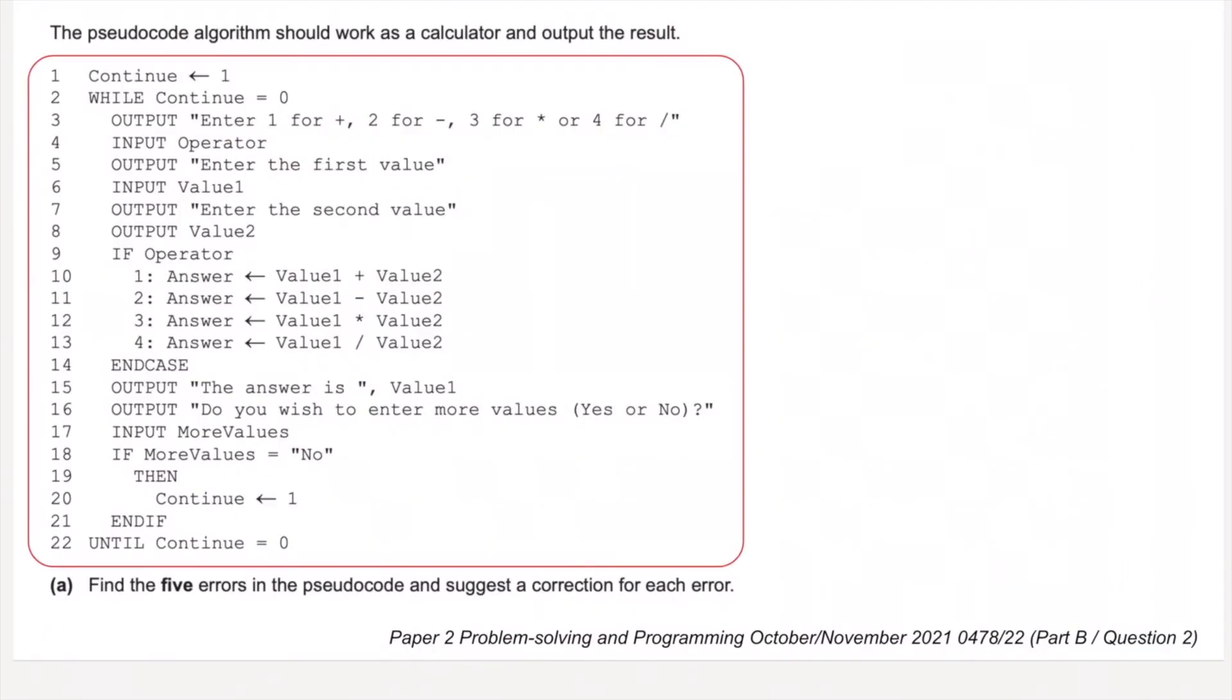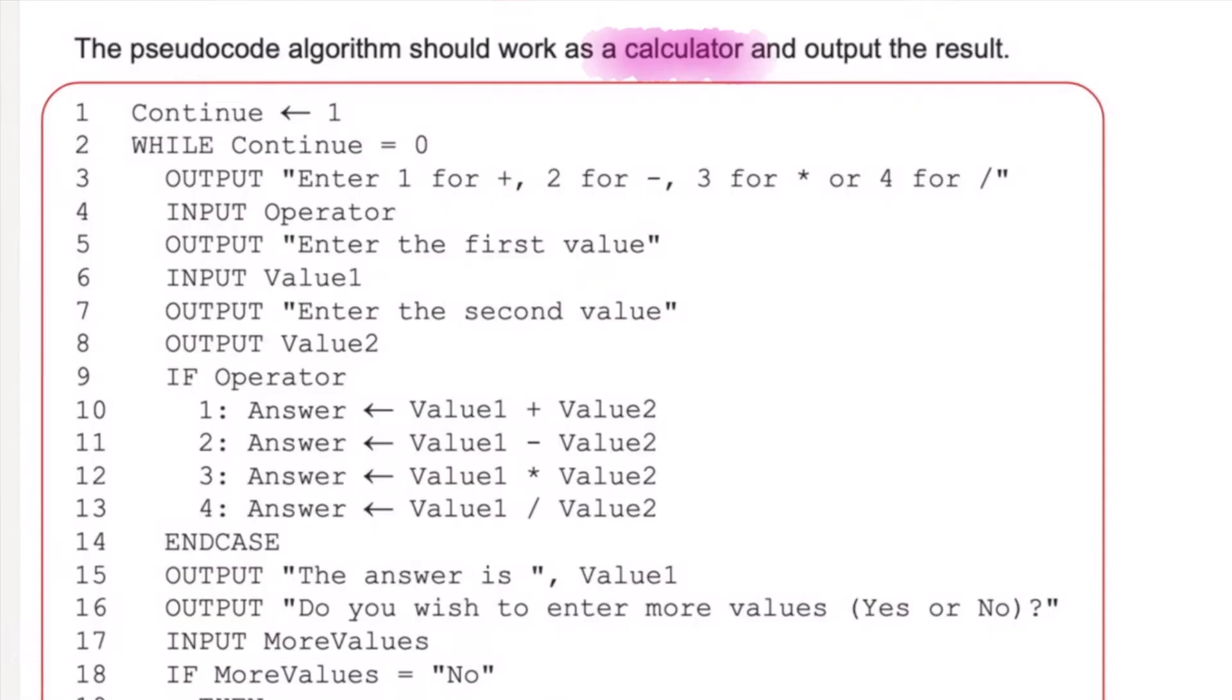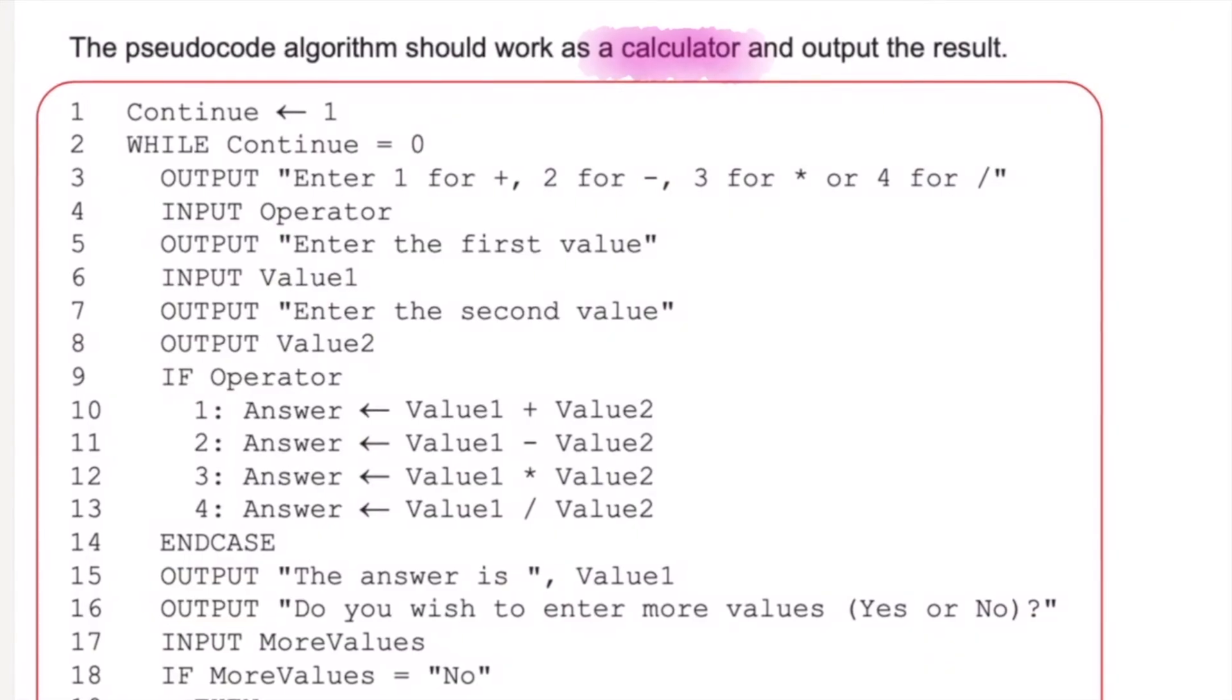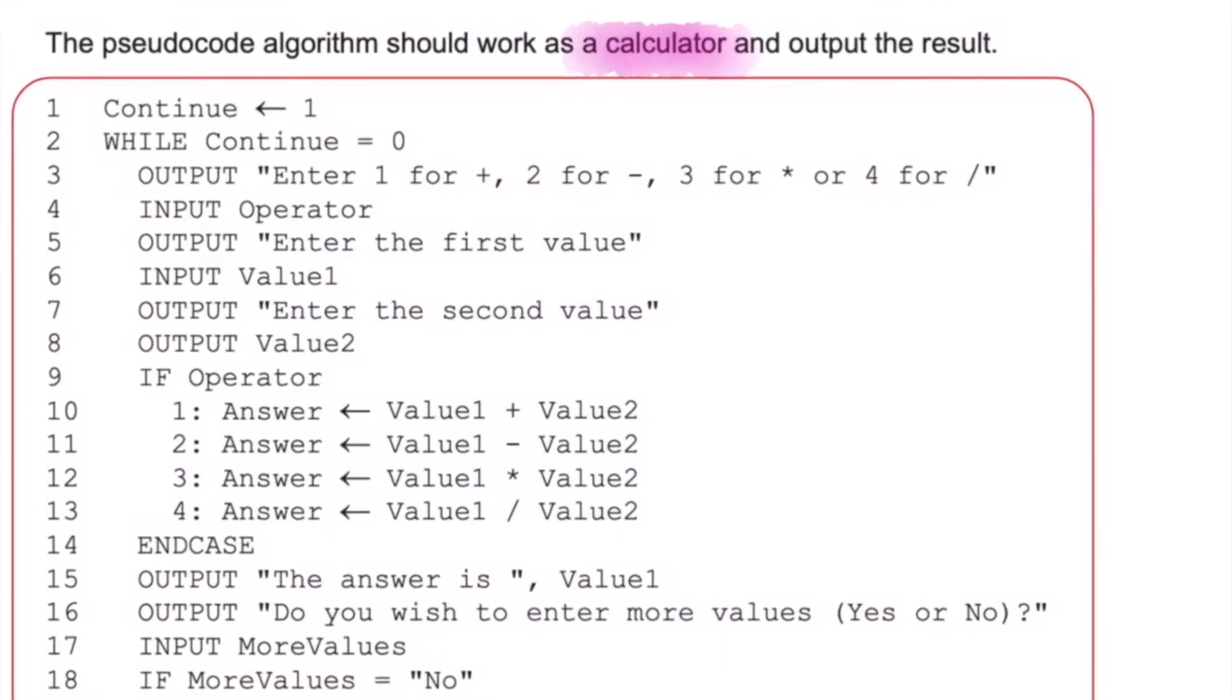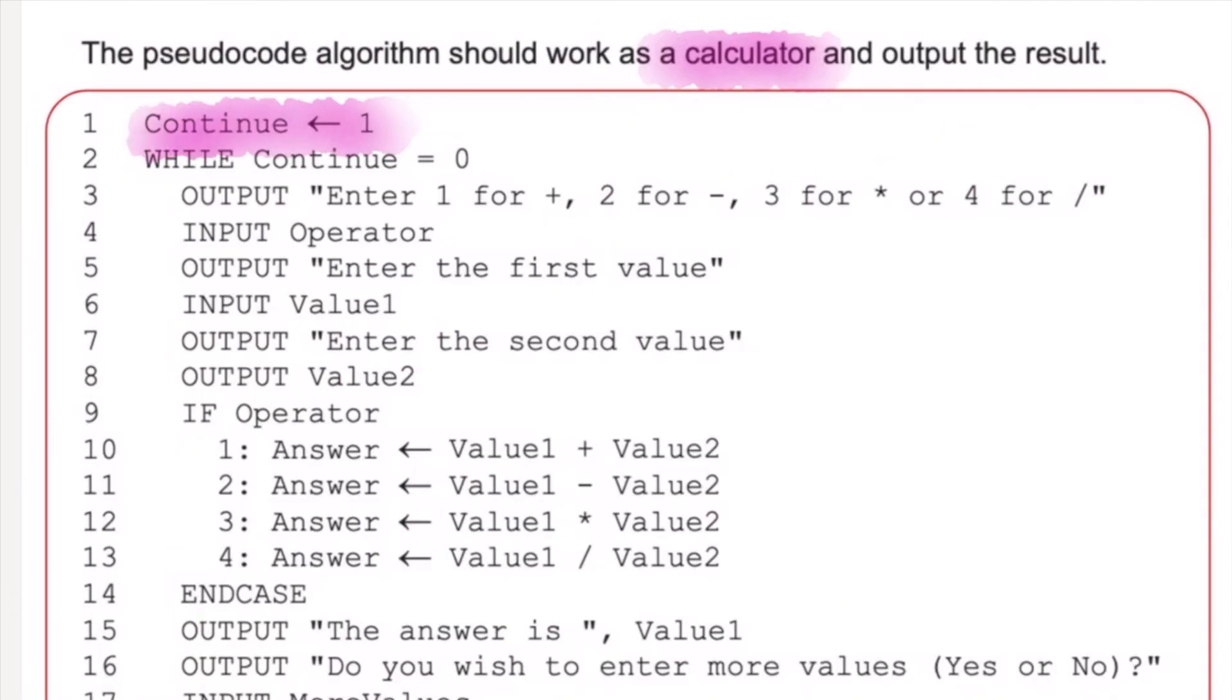And finally, for this next one, this is from the October-November 2021 paper, part B, question 2. We have some more pseudocode, and this one is meant to be performing like a calculator. So we're going to continue. We're going to have a look, read through it. Continue has been assigned the value 1. While continue equals 0. So continue has been assigned the value 1, but while continue equals 0. There's a problem in that first line, so I'm just going to highlight that. It could be the second line, but I think it's going to be that first one. I think the counter should be 0 there. So I'm just going to change this to continue has been assigned the value 0.